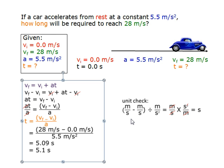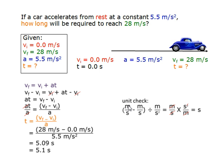Lastly, we do the unit check. Meters per second for final velocity minus meters per second for initial velocity, divided by meters per second squared which is acceleration, equals meters per second times second squared over meter. Meters will cancel out and one of the seconds from second squared will cancel out, and the final unit will become seconds.